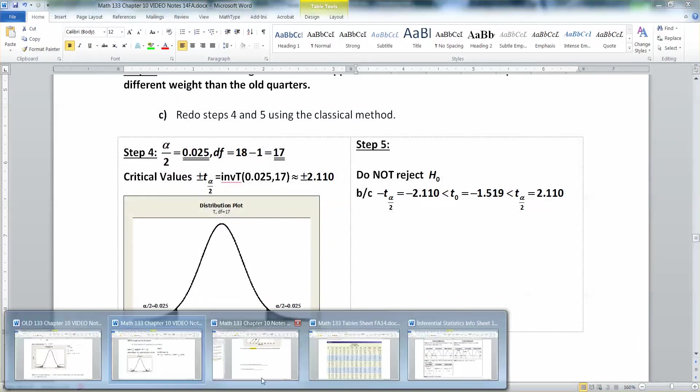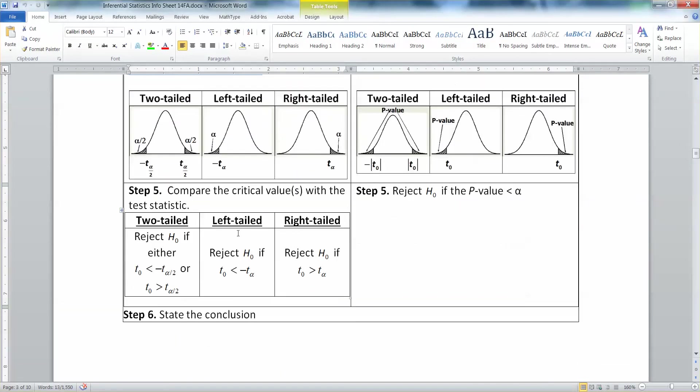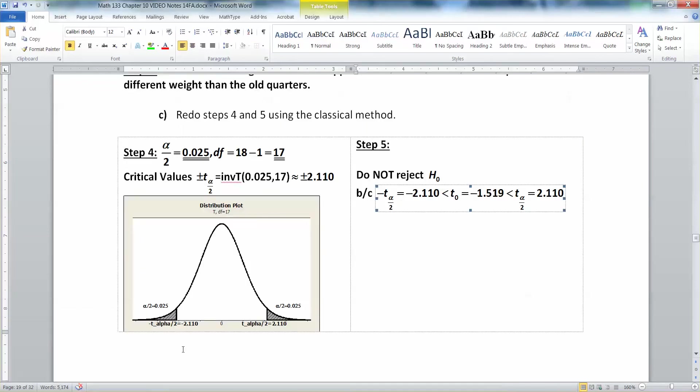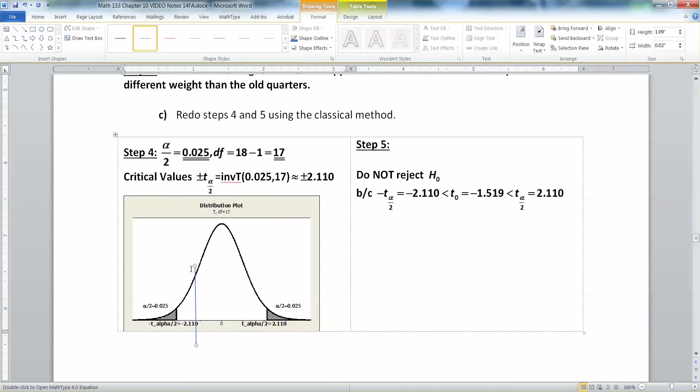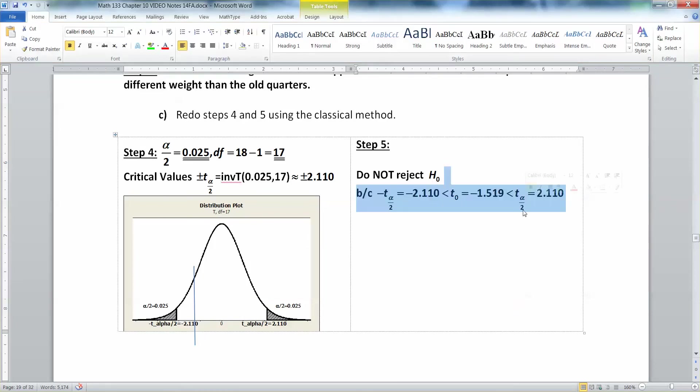Since it's between them, we are not going to reject the null hypothesis. Because when you look at the inferential statistics sheet, it says you reject if you're less than negative t alpha or above positive t alpha. In other words, if you're in the tail over on the left or the tail over on the right. And our value of negative 1.519 is not in either of those tails. In fact, it's about where this line is that I just drew, which is not nearly far enough over to be in the tails. And that's what we wrote right here.